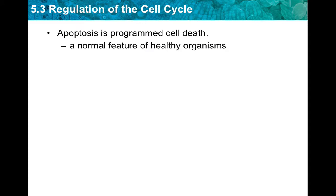Apoptosis is programmed cell death. It occurs when internal and external signals activate genes that help produce self-destructive enzymes, making it essentially a self-destructive process. The nucleus shrinks and breaks apart, and the cell is recognized by specialized cells in the immune system.